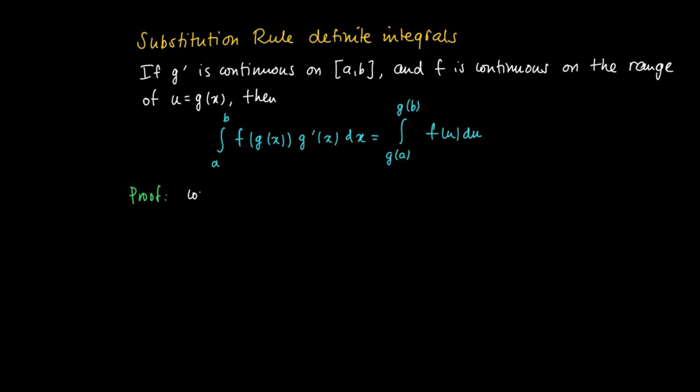Well the proof is rather easy. So since f is supposed to be continuous, f has a primitive. So consider capital F as primitive of f.